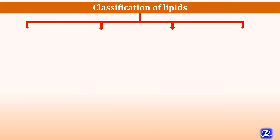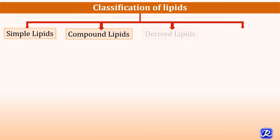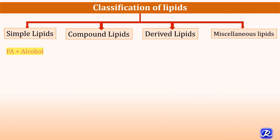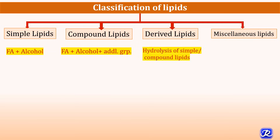Lipids are classified into four classes: simple lipids, compound lipids, derived lipids, and miscellaneous lipids. Simple lipids are made up of fatty acid plus alcohol. Compound lipids are made up of fatty acid plus alcohol plus an additional group. Derived lipids are obtained from hydrolysis of simple or compound lipids, and miscellaneous lipids do not fall in any of those categories but possess the characteristics of lipids.